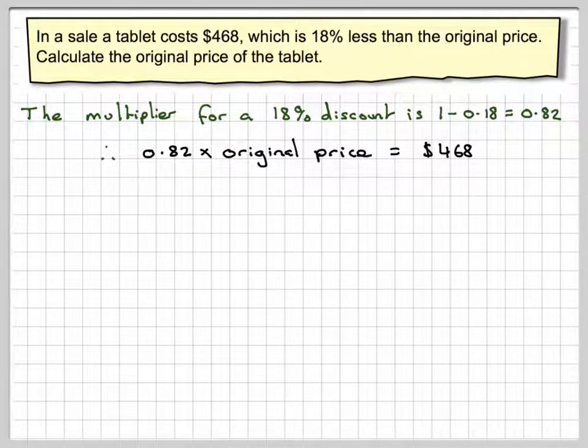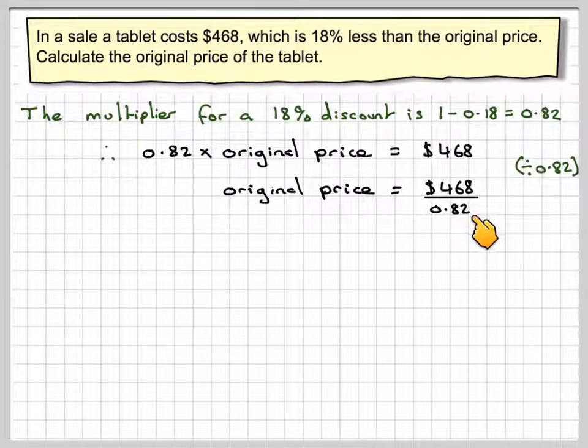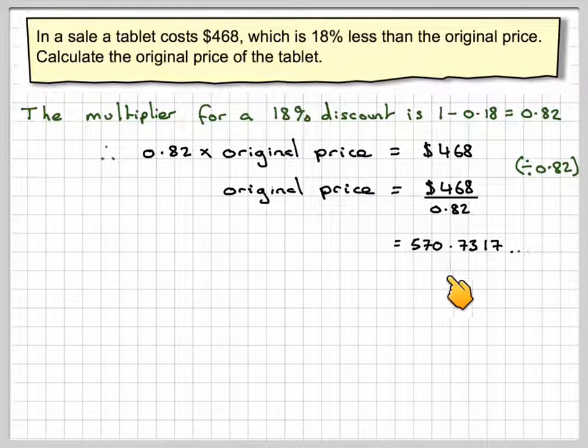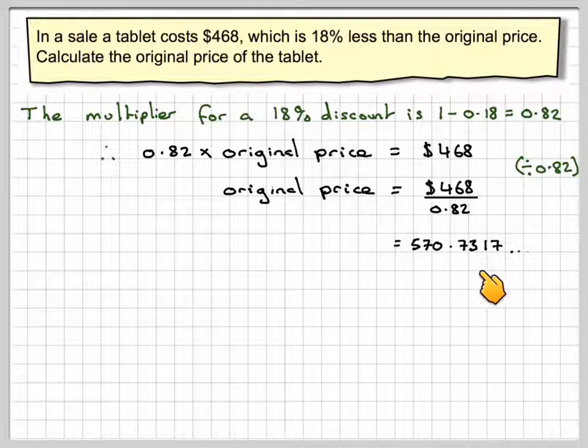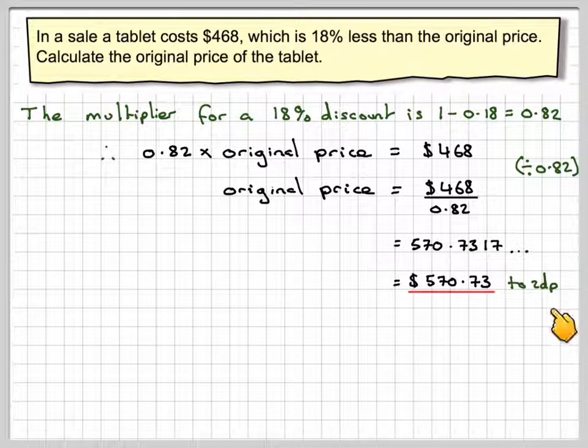So the opposite of multiplying is to divide by 0.82. So the original price will be equal to $468 divided by 0.82, which is equal to 570.7317. We're dealing with money, so it's going to be $570.73 to 2 decimal places.